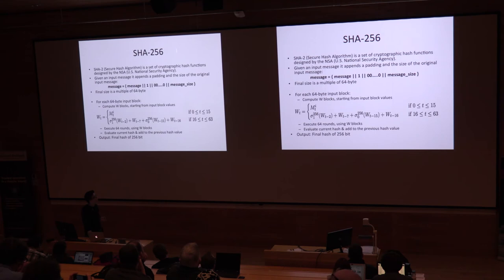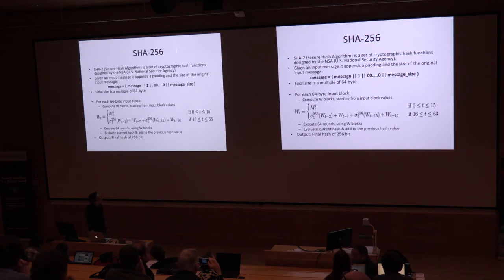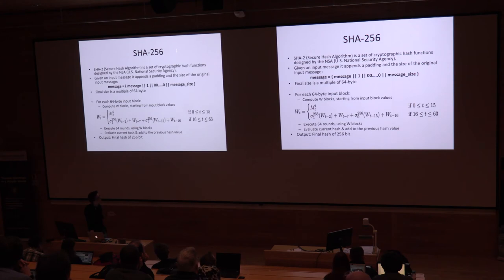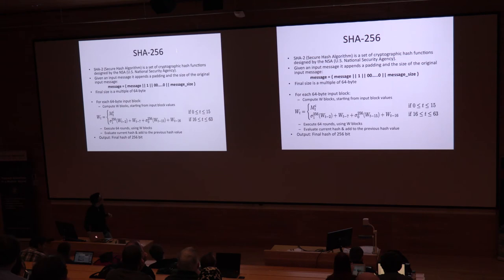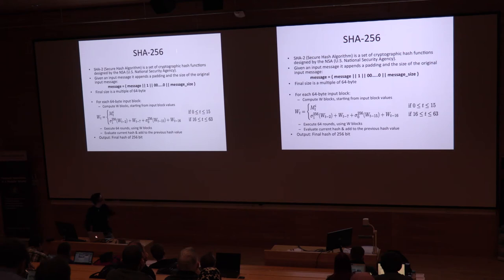Before talking about the second improvement, I just want to give you an overview of the SHA function. This hash function takes an input message, appends a padding and the size of the original message, and obtains a final message that is a multiple of 64 bytes. Then the function splits this message into input blocks of 64 bytes, and for each of the 16 words in those input blocks, the function computes the so-called W blocks — 64 W blocks in total — in which the first 16 rely directly on the values of the input block. Finally, having those W blocks, the SHA function executes 64 rounds and computes the current hash for the current input block.